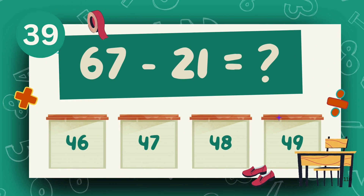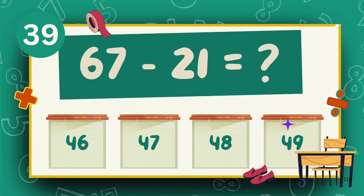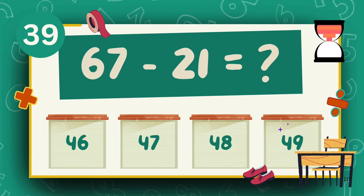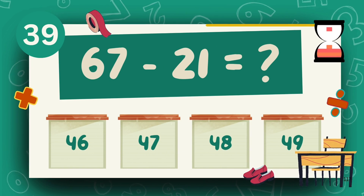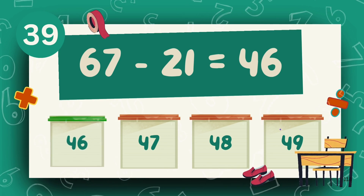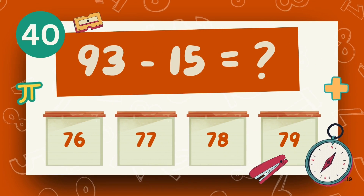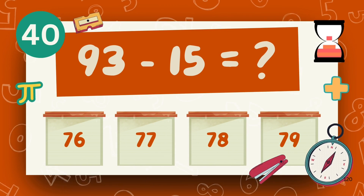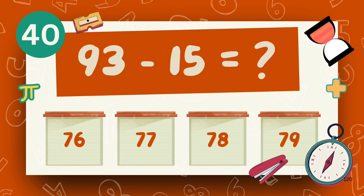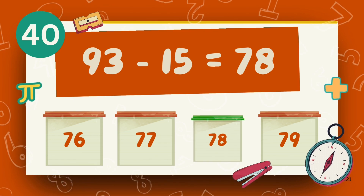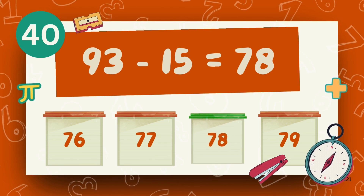What is 67 minus 21? The answer is 46. What is 93 minus 15? The answer is 78.